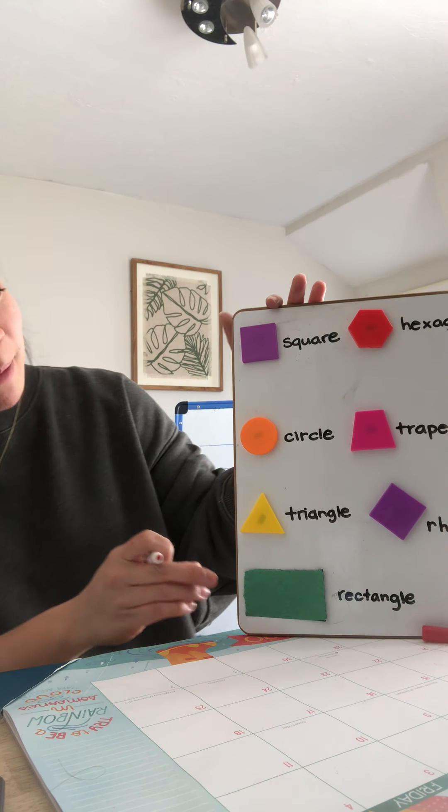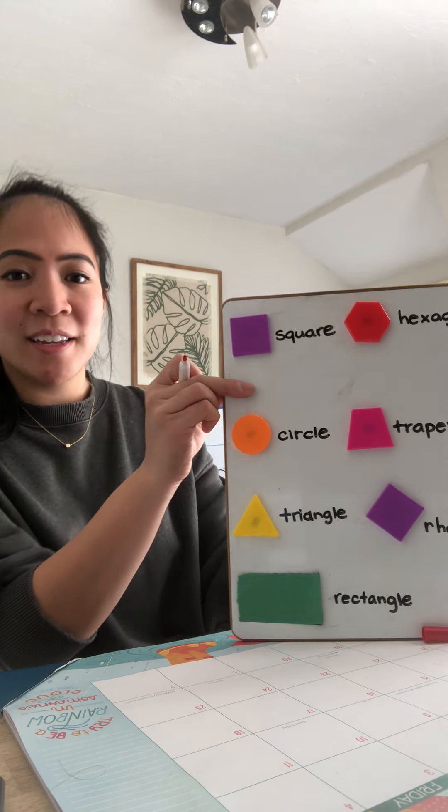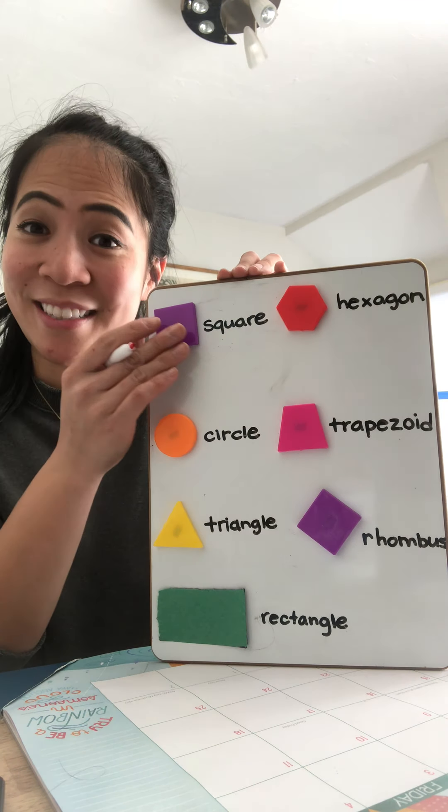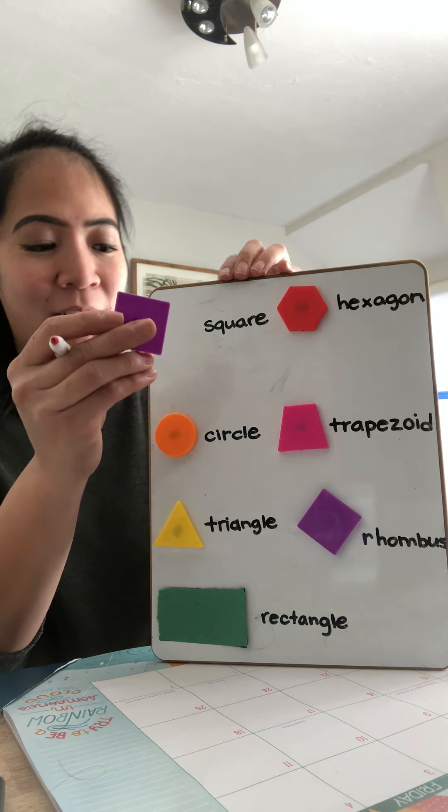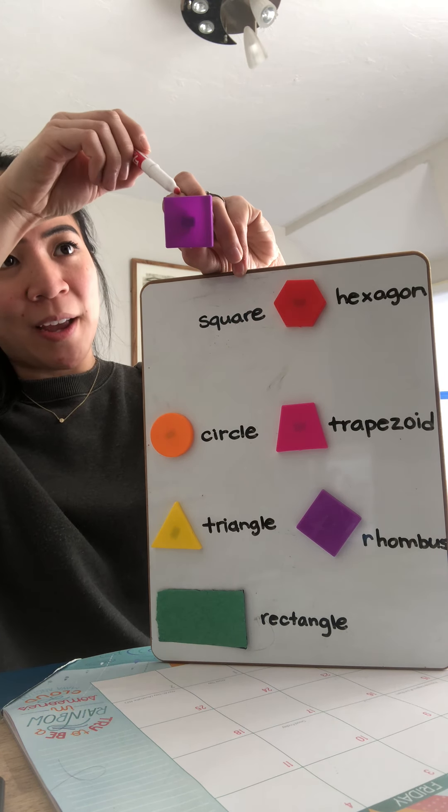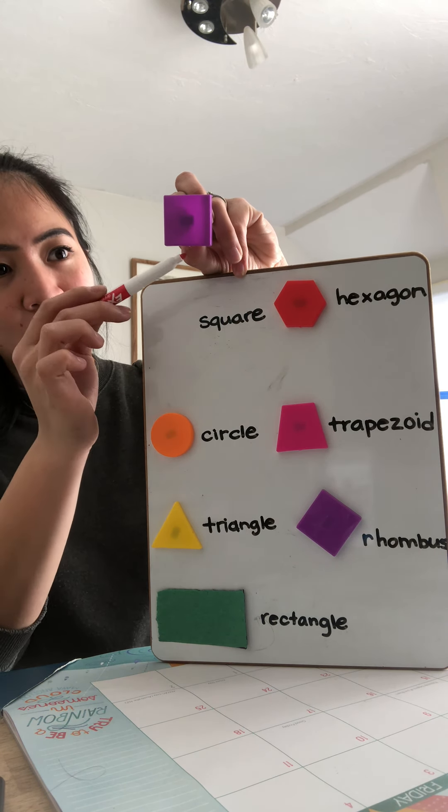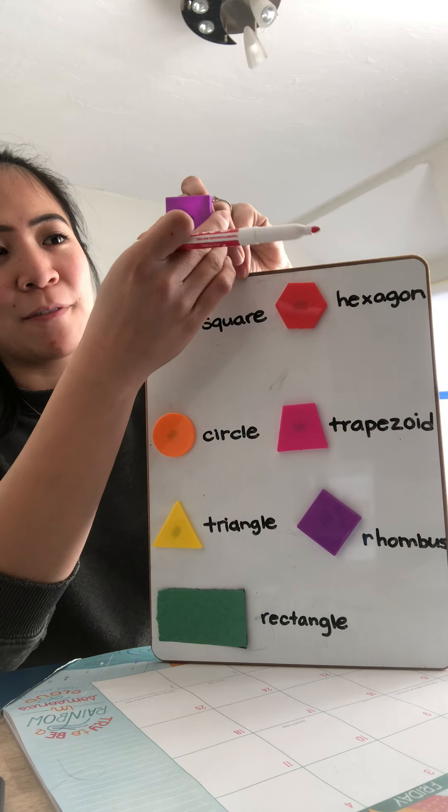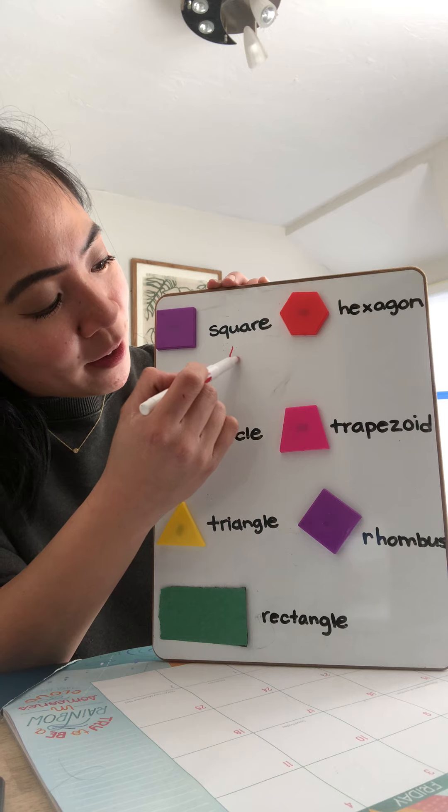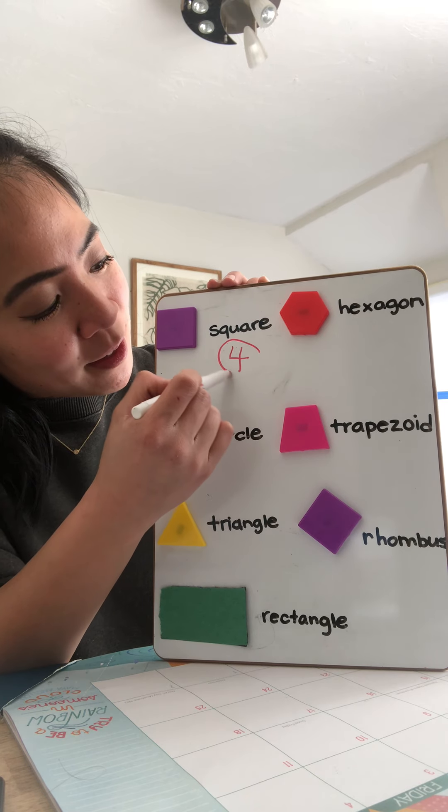Now let's talk about the square. Can you guys count with me? How many sides does a square have? Can you guys count with me? Ready? One, two, three, four. It's got four sides. I'm going to write four right here. I'm going to circle the number.